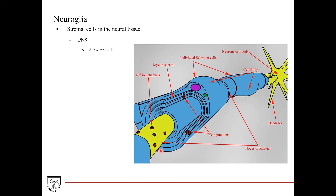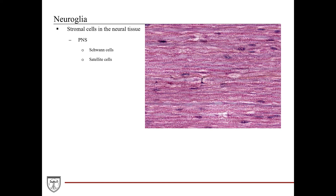Another type of stromal cell in the PNS are the satellite cells. Satellite cells are found in specialized regions of the PNS called the ganglia, where the cell bodies of neurons residing outside of the CNS are concentrated. It's the job of the satellite cells to insulate the cell bodies of such PNS neurons and to regulate their microenvironments.